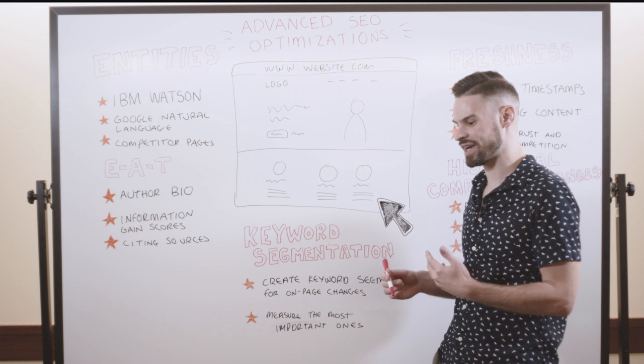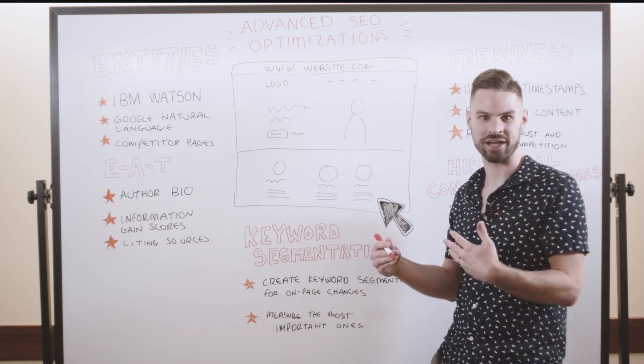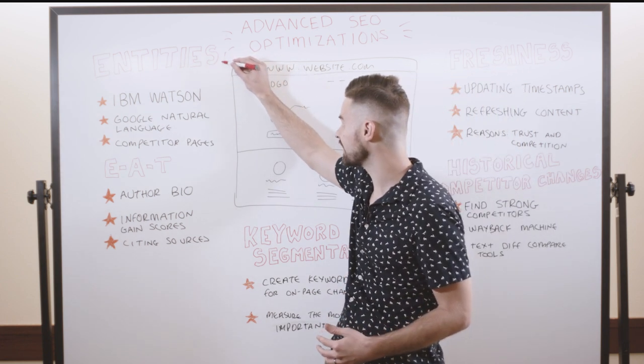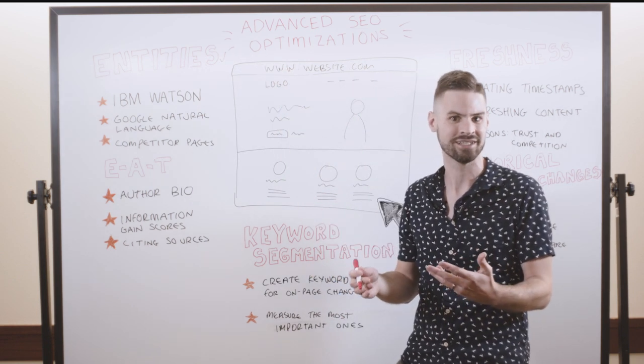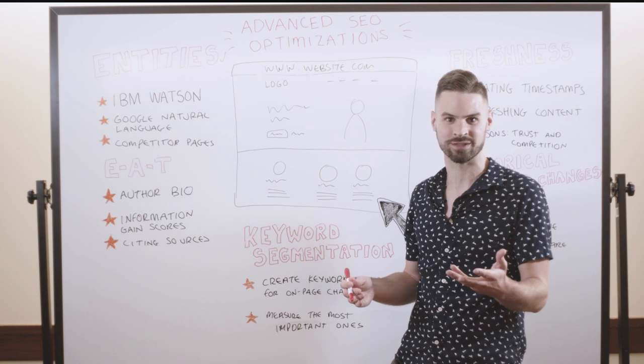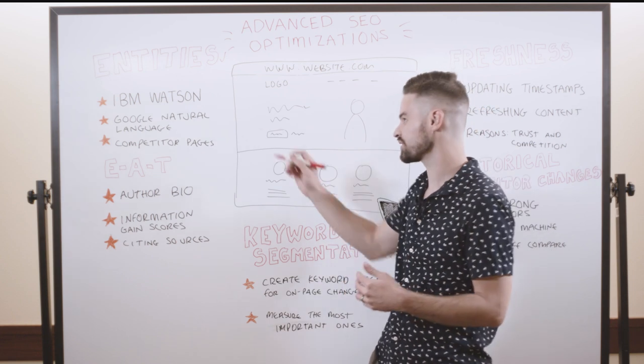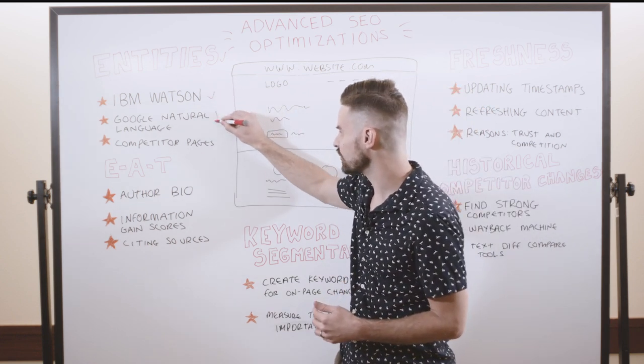One of the best ways I found to shift away from the keyword mindset is actually to shift to more of an entity mindset. So for an example, if you were going to optimize a page for the term retire early, instead of using the term retire early a bunch of times on the page, you could use tools like IBM Watson or Google Natural Language.